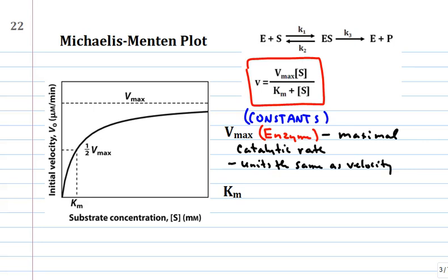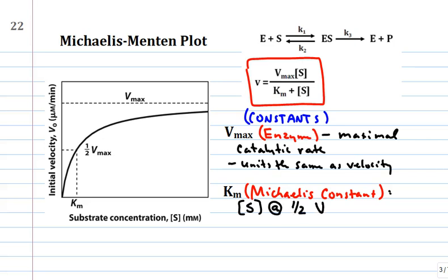Km is what we call the Michaelis constant. It is the substrate concentration at one-half the maximal velocity.